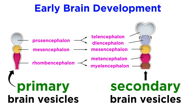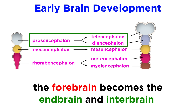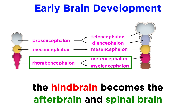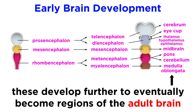From the primary brain vesicles, the secondary brain vesicles eventually develop. The forebrain becomes the telencephalon or endbrain, and the diencephalon or interbrain. The midbrain stays as it is, and the hindbrain becomes the metencephalon or afterbrain, and myelencephalon or spinal brain. These will then all develop further to become the regions of the adult brain.